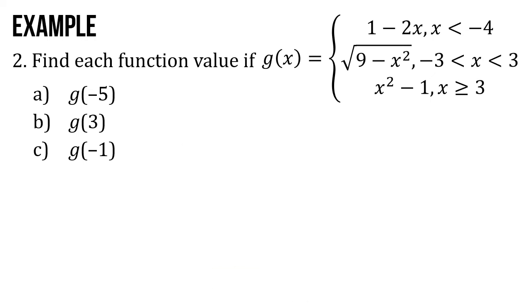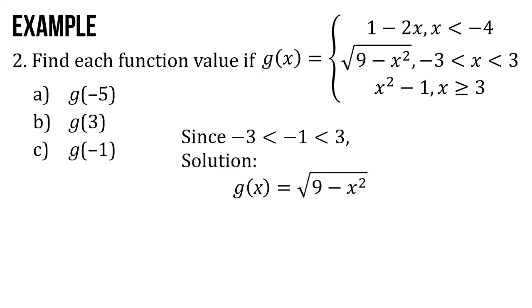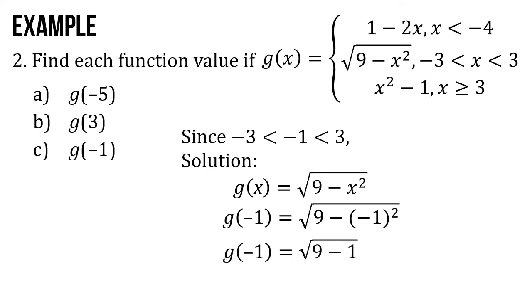Then letter C: g of negative 1. Since negative 1 is between negative 3 and 3, we will be using the second function, g of x equals square root of 9 minus x squared. Substituting x equals negative 1, g of negative 1 equals square root of 9 minus (negative 1) squared. Since negative 1 squared is positive 1, it becomes square root of 9 minus 1. So g of negative 1 equals square root of 8.